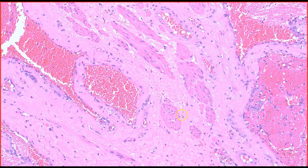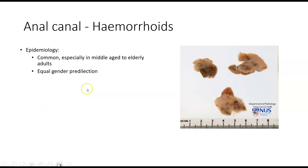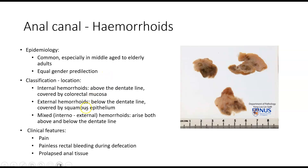Hemorrhoids are a very common condition that occur usually in middle-aged to elderly adults with an equal gender predilection. They are classified according to location. Internal hemorrhoids occur above the dentate line and hence are covered by colorectal-type glandular mucosa. External hemorrhoids occur below the dentate line and are covered by stratified squamous epithelium. There can also be mixed internal-external hemorrhoids, having both columnar as well as stratified squamous epithelium overlying the hemorrhoid.